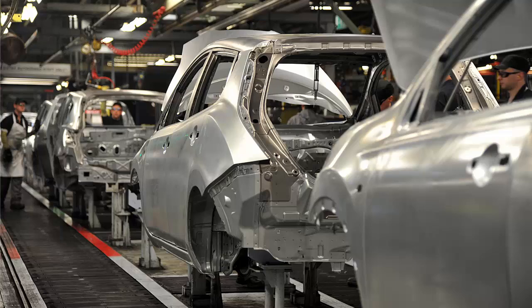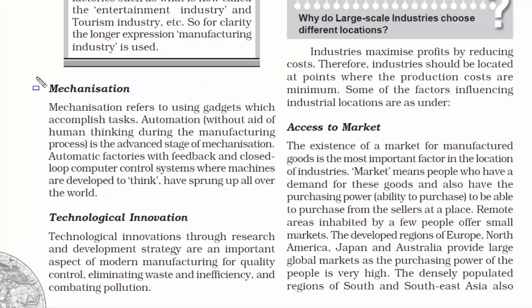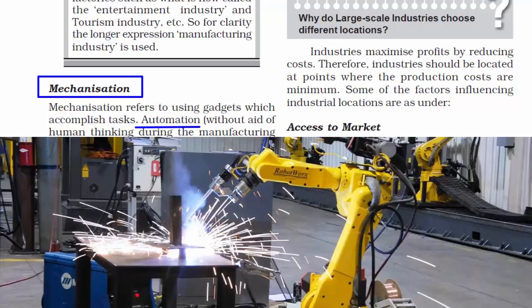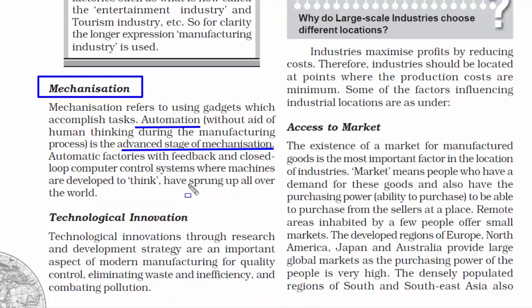Over time, workers become specialists in their line of work. The second quality is mechanization. To accomplish any work, you need tools; to finish a bigger job, you need bigger and better tools. In modern factories, automation plays a very important role — it saves time, energy, and increases productivity. You can see a lot of computer-controlled machines in automobile industries.